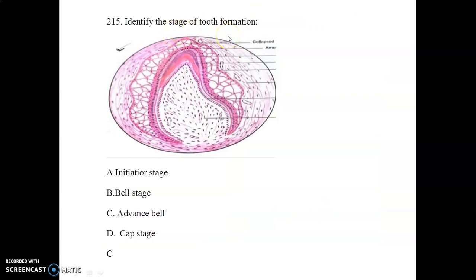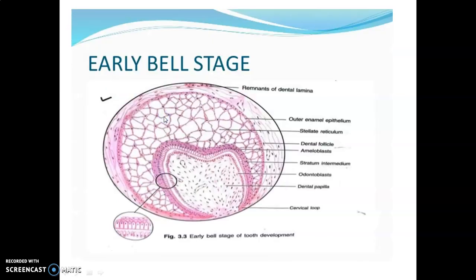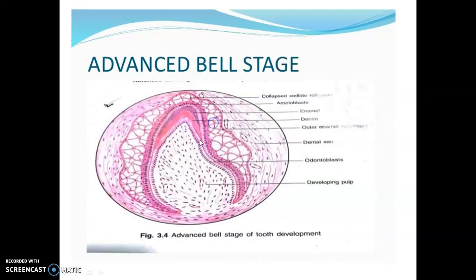Identify the stage of tooth formation. Whenever you see such a diagram, focus on which structures are present. Here you can see the formation of both enamel and dentin, so this is the advanced bell stage. In early bell stage the stellate reticulum is present; in advanced bell stage the ameloblasts and odontoblasts are visible and the stellate reticulum gets collapsed. These three features help differentiate between early and advanced bell stage.